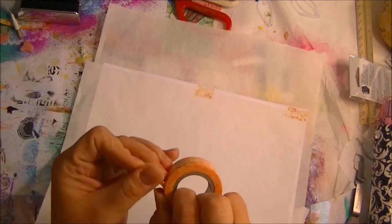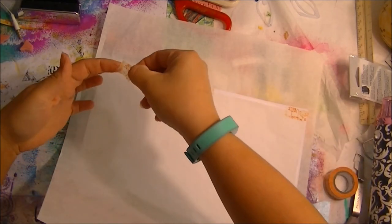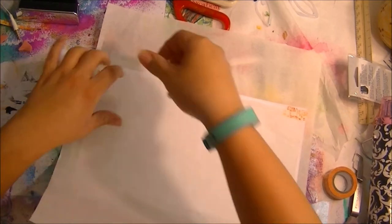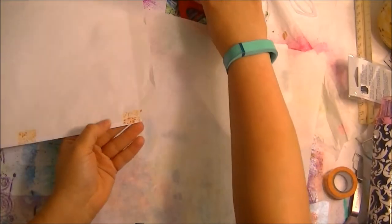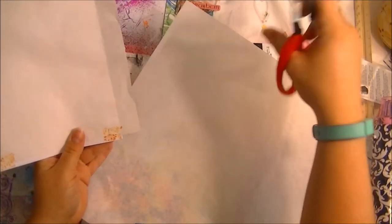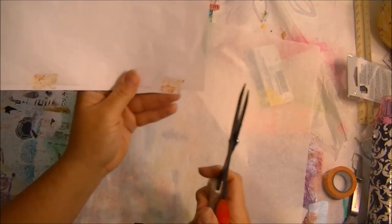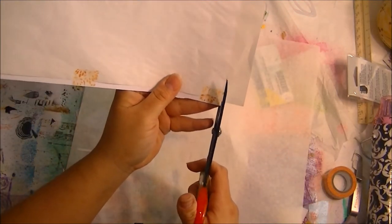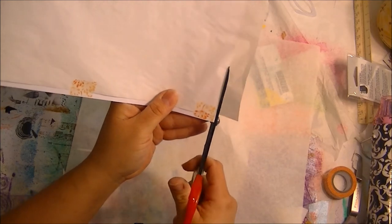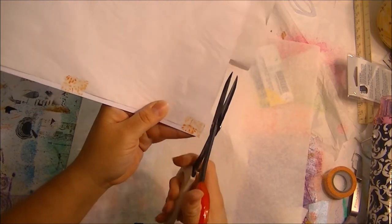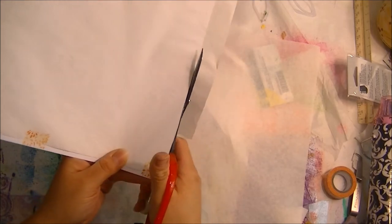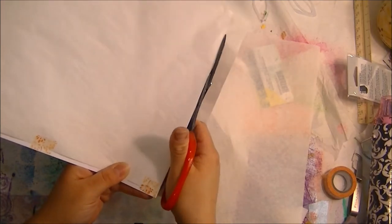If you tried to just print directly onto the deli paper, with as thin as it is it's not going to be able to go through without causing a paper jam. It's going to get crinkled up in your printer. So what I'm doing now is just trimming it down to size.